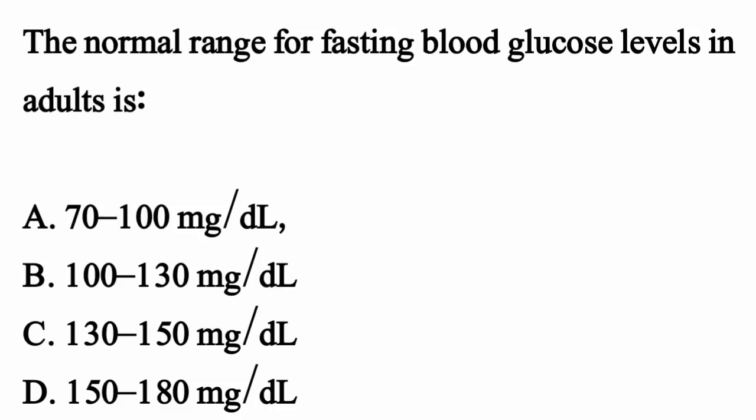The normal range for fasting blood glucose levels in adults is — the correct option is Option A, 70 to 100 mg/dL.